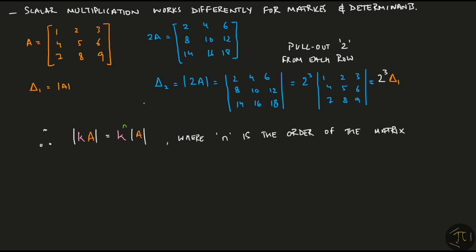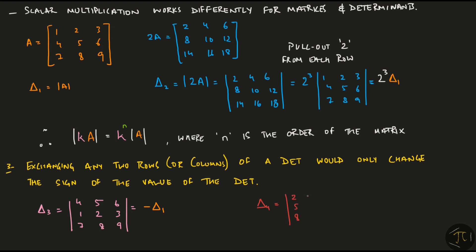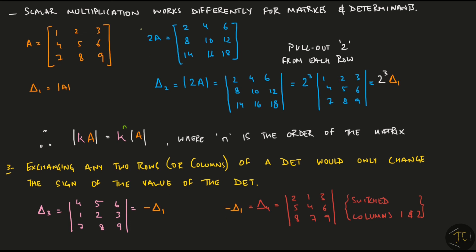The third property says that exchanging any two rows or columns of a determinant would only change the sign of the value of the determinant. So if I switch the row 1 and row 2, the value of determinant is minus delta1. Similarly, this delta4 here where the column 1 and 2 are switched is again equal to minus delta1.